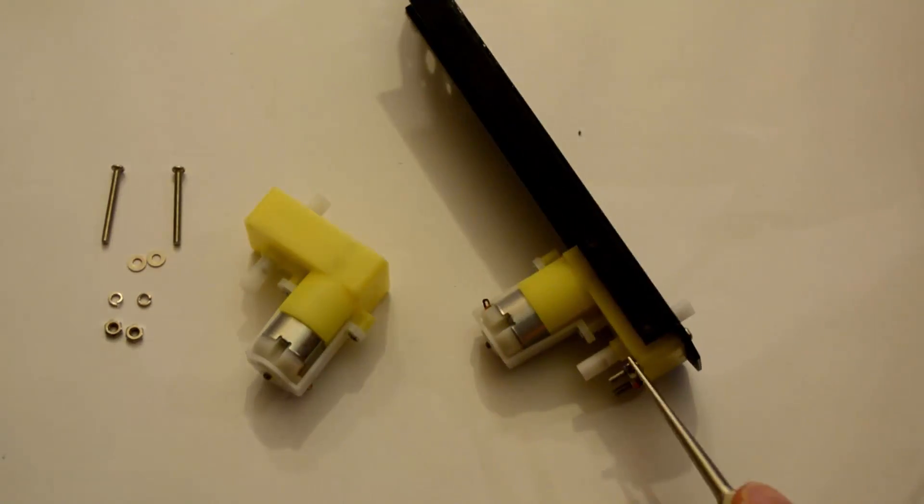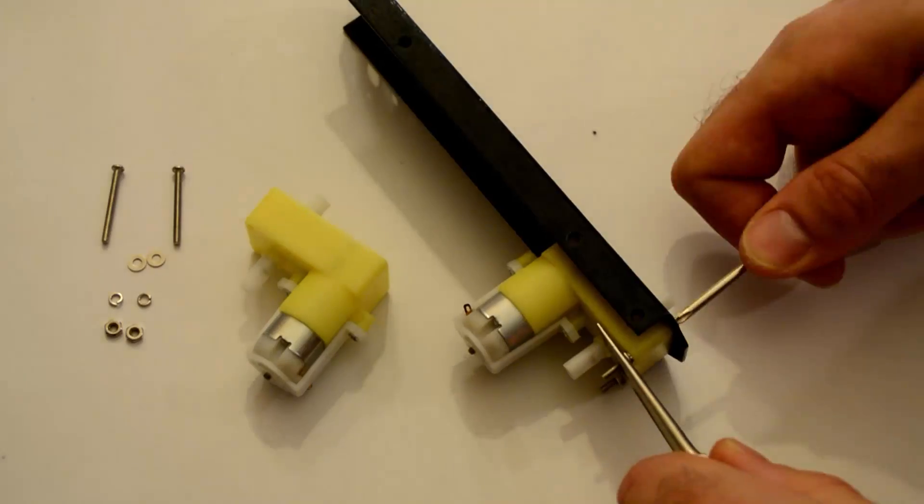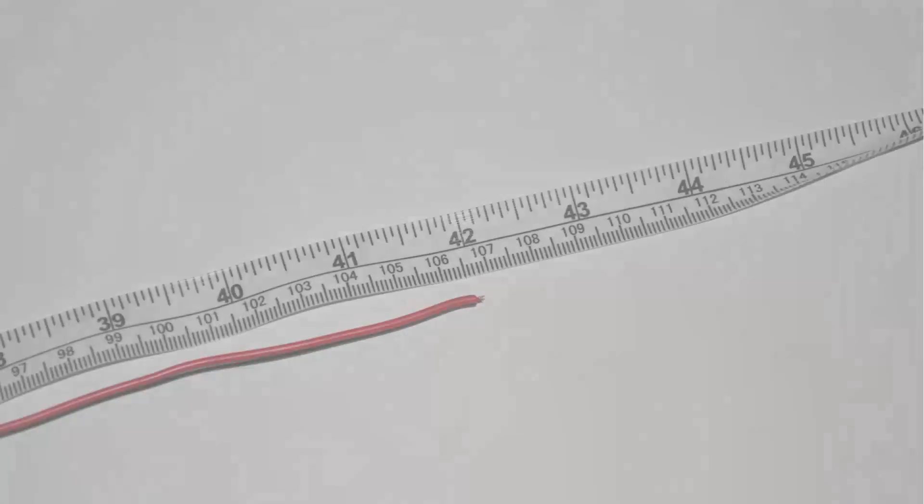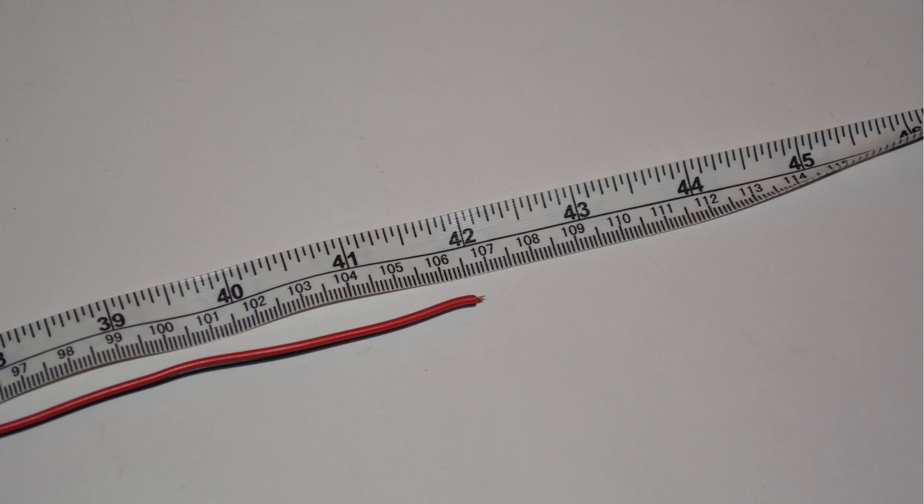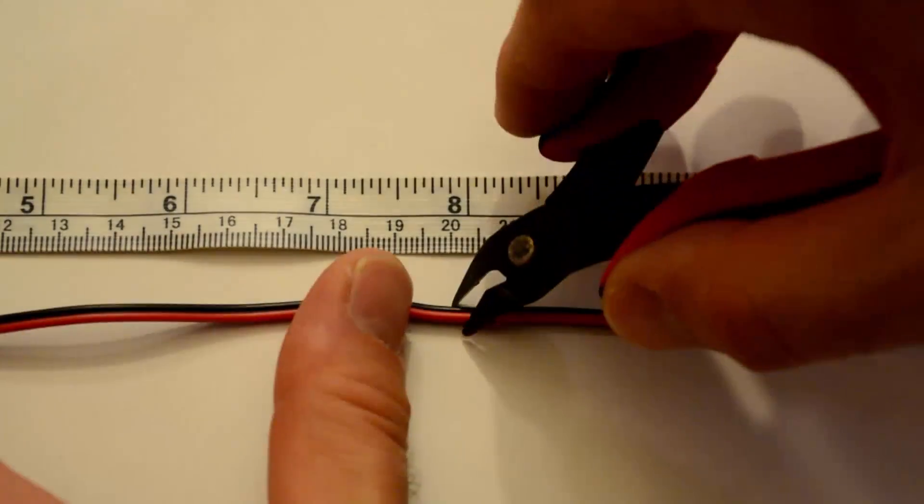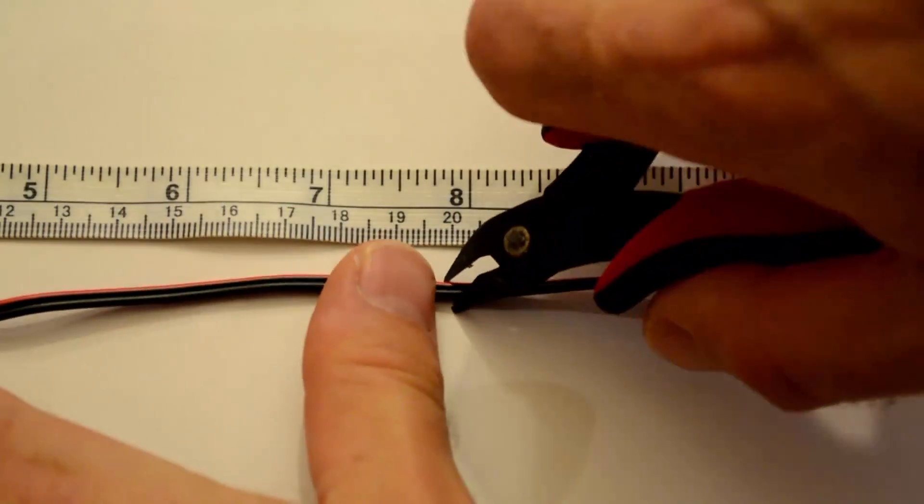Now, once you have both sides assembled, now is the time to solder on the wires for the motor control. For whatever reason, this step is left out of the manual. My kit came with about 42 inches of red and black wire, which is about 106 centimeters. I cut four 8-inch strips of the wire, which are about 20 centimeters, one for each motor.